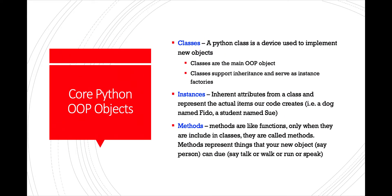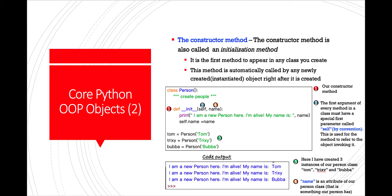Let's define some core Python object-oriented programming objects. Classes: a Python class is a device used to implement new objects. Classes are the main object-oriented programming object — they support inheritance and serve as instance factories. Instances inherit attributes from a class and represent the actual items our code creates, like a dog named Fido or a student named Sue. Methods are like functions, only when they are included in a class they are called methods — they represent things that your new object, say a person, can do, like talk, walk, run, or speak. We'll look at the constructor method now. The constructor method is also called the initialization method. It is the first method to appear in any class you create, and it is automatically called by any newly created or instantiated object right after it's created. So let's look at a bit of code to make this come to life.